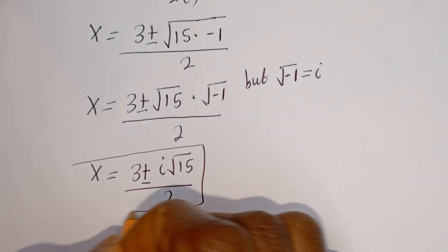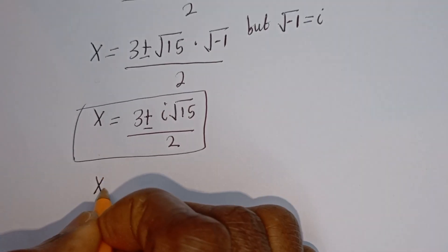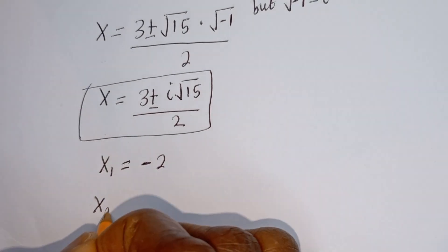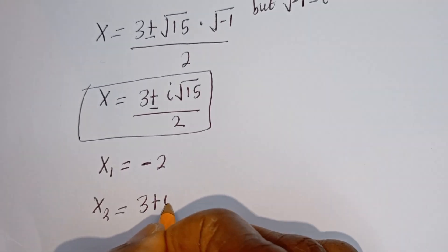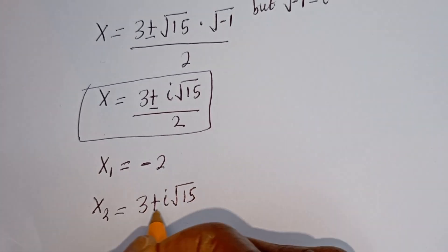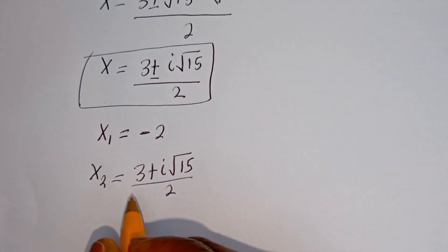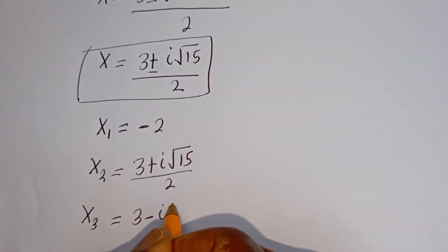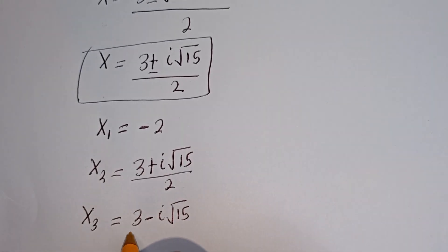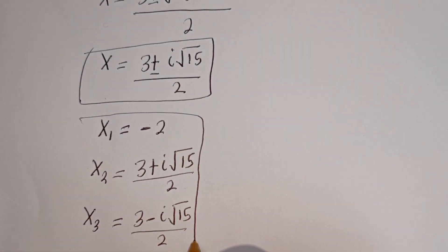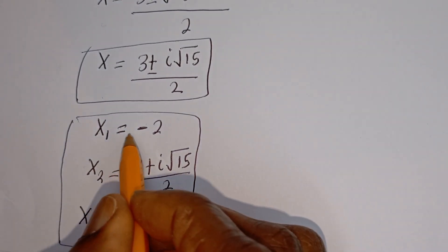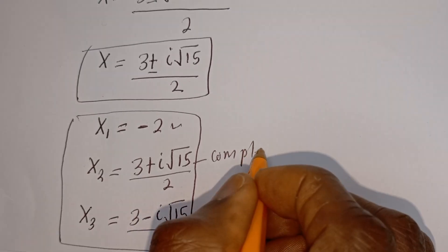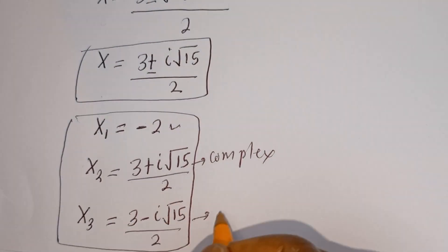This is also the value of S. Therefore our final answers are: S1 is equal to minus 2, S2 is equal to 3 plus i root 15, over 2, and S3 is equal to 3 minus i root 15, over 2. These are the values of S. We can see that in this solution we have one real solution and two complex solutions.